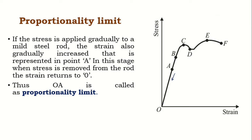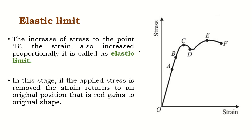Here stress, represented by sigma, is directly proportional to strain, represented by epsilon or small e. This means mild steel obeys Hooke's law in this region. The next point is the elastic limit, point B.